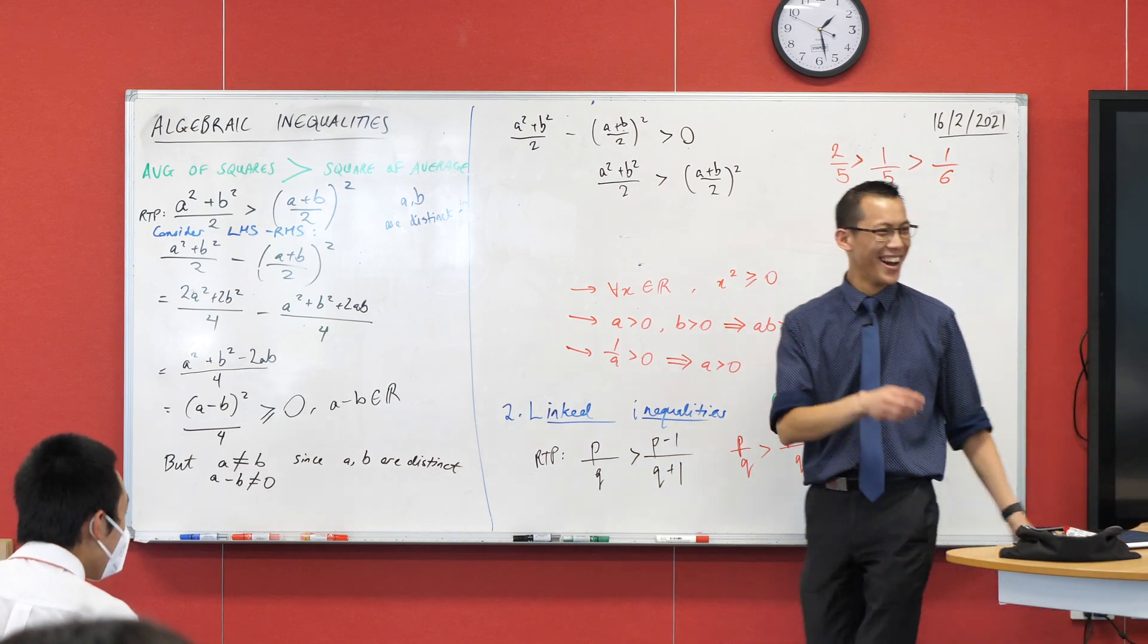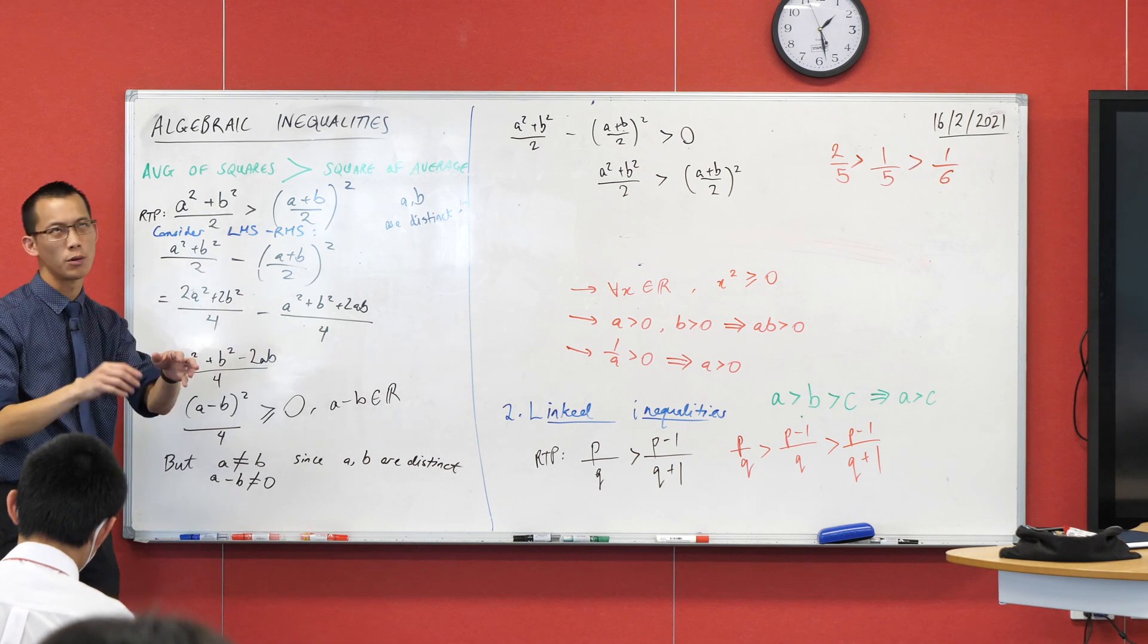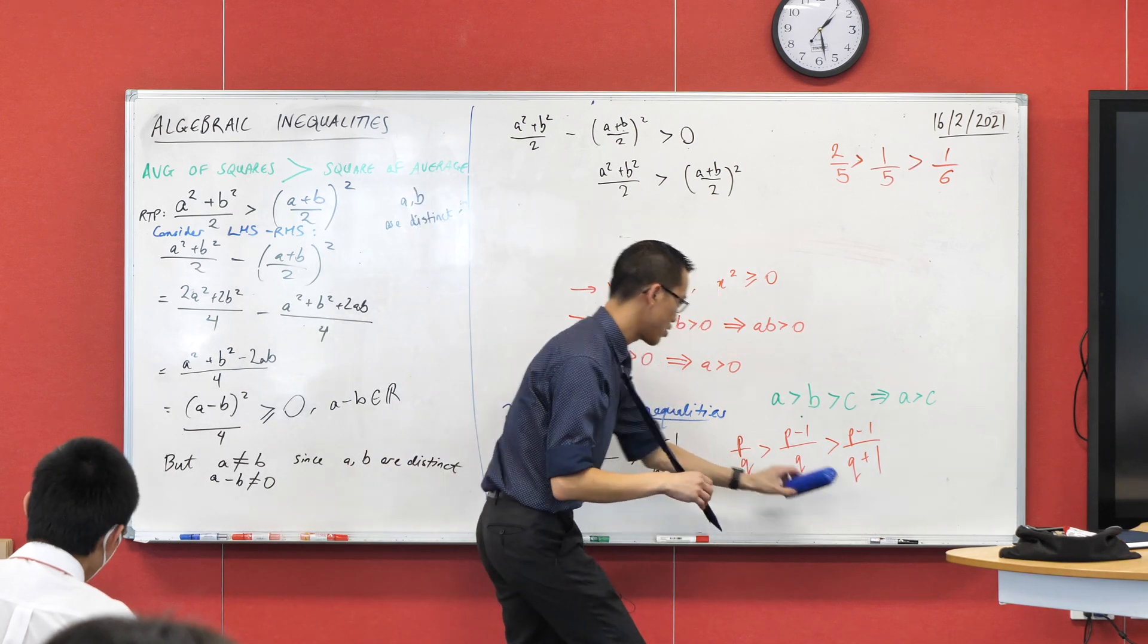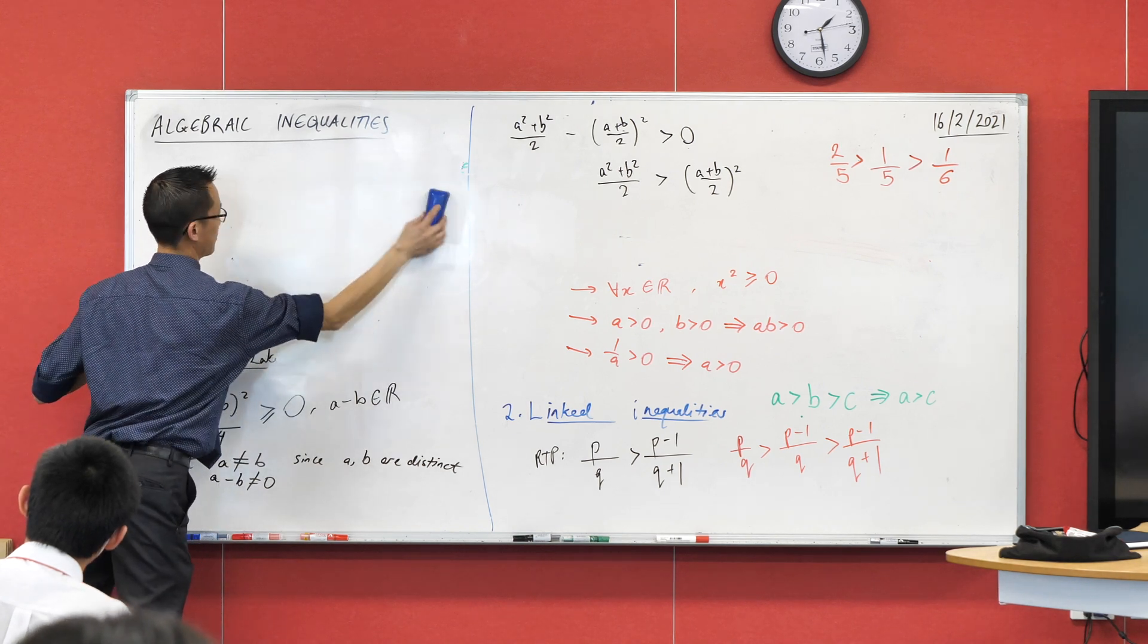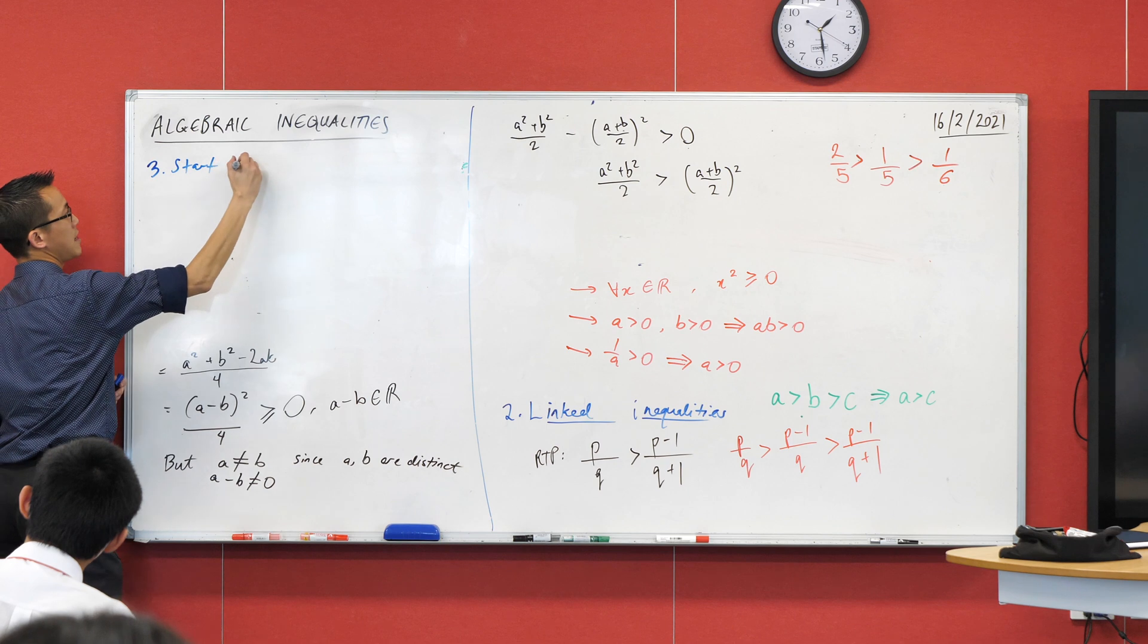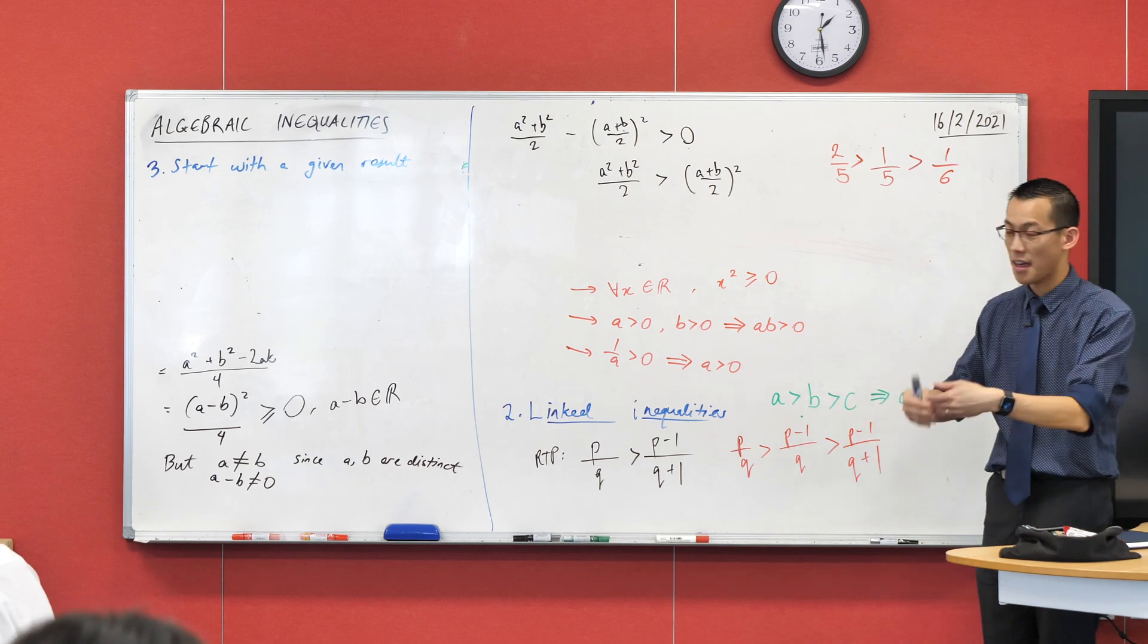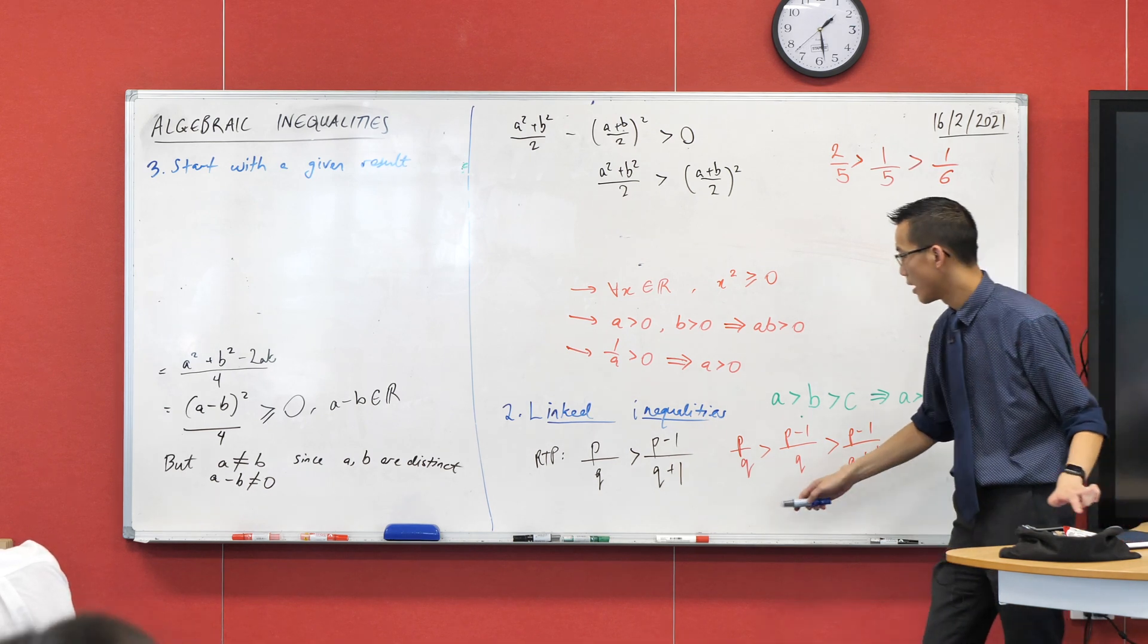I promised three strategies. Number one was looking for the sign - prove it's positive or negative or find some appropriate related object that you can prove positive or negative. The second one was about linking together or stringing together a set of inequalities. And the last one, strategy number three, is to start with a given result. Let me say that again - you want to start with a given result.